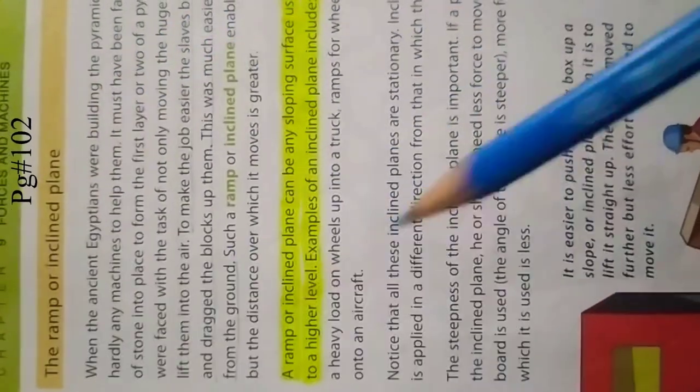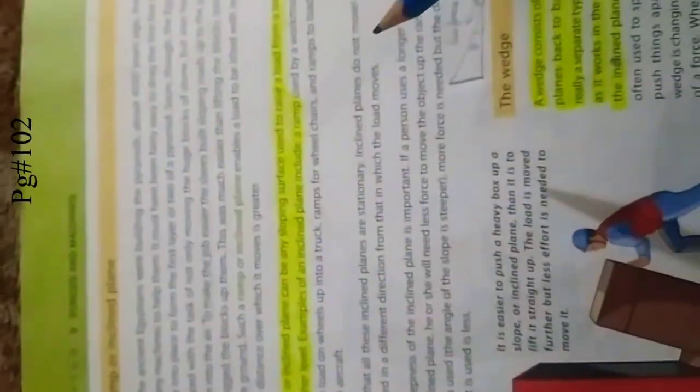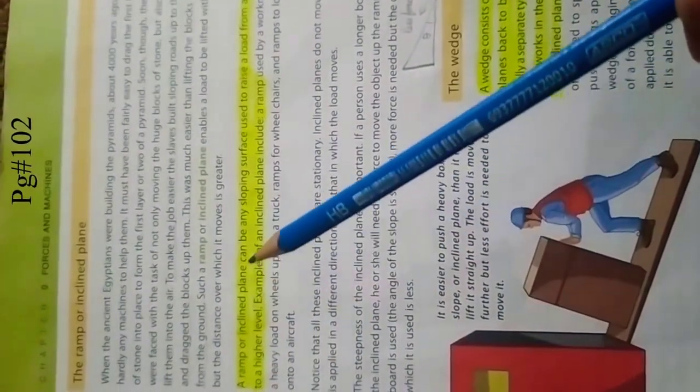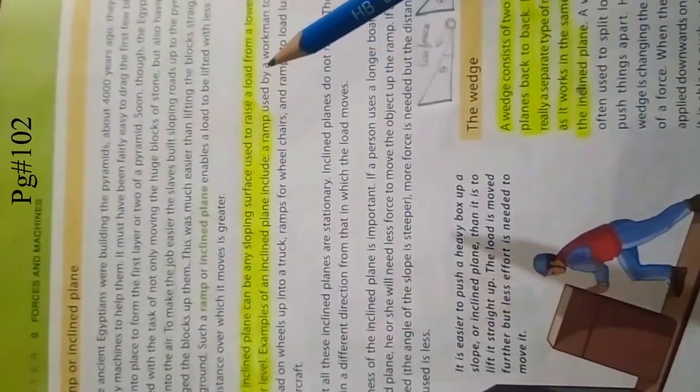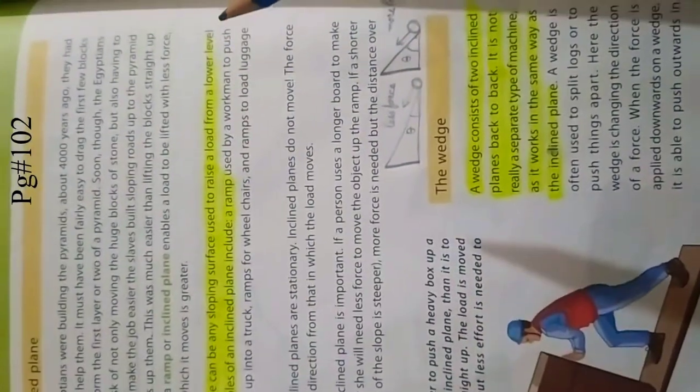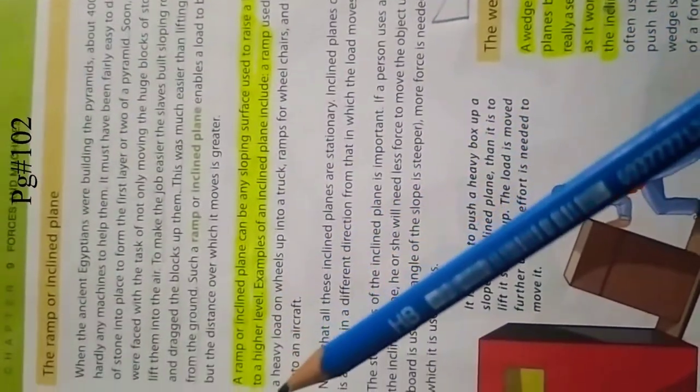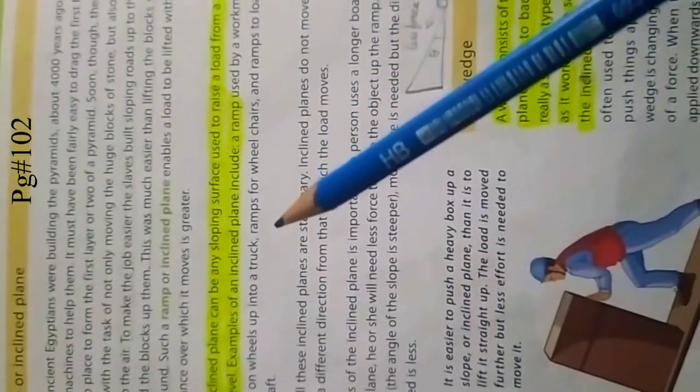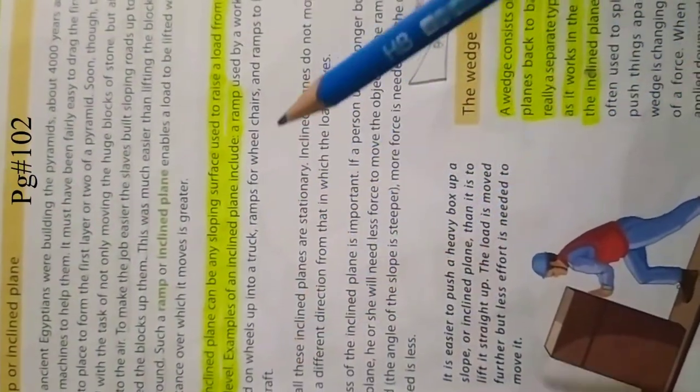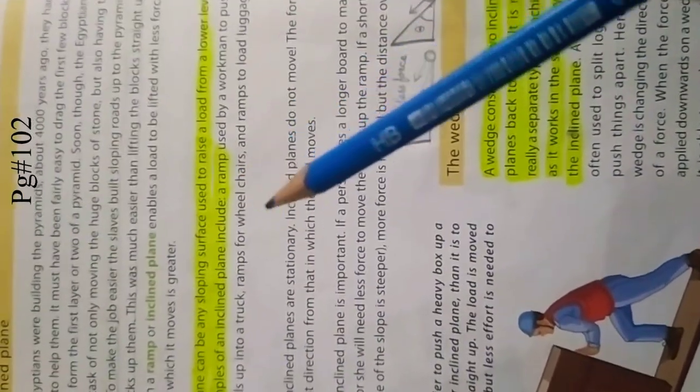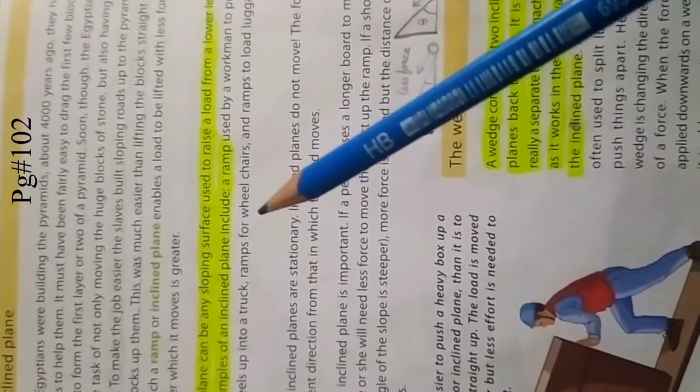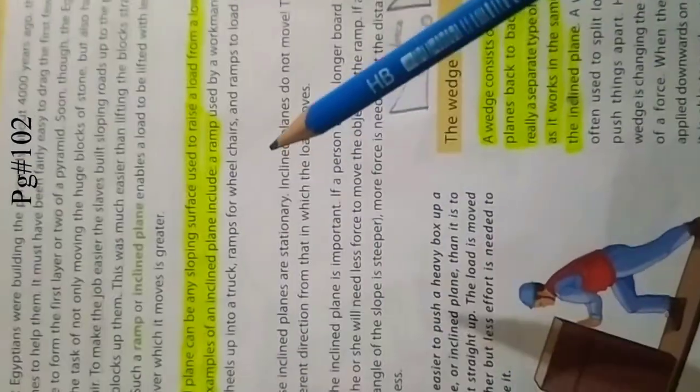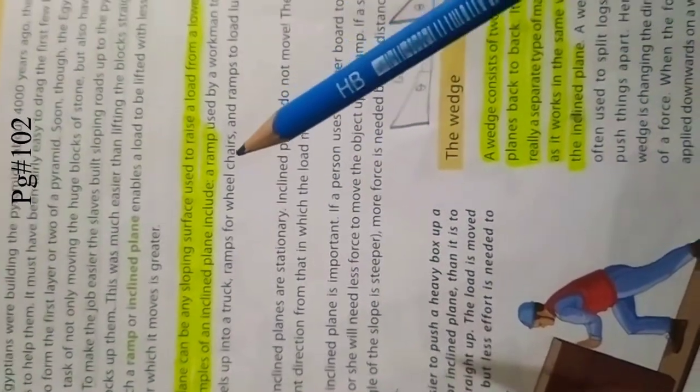Students, today we are going to study inclined plane. The ramp or inclined plane - I have highlighted the definition here. A ramp or inclined plane can be any sloping surface used to raise a load from a lower level to a high level. Examples of an inclined plane are ramp or staircase or wheelchair ramp. You would have seen in hospitals there are ramps for the patients who can't move, so their wheelchairs are taken from there.